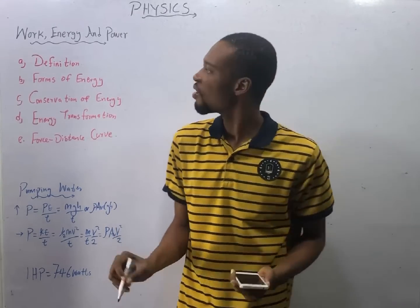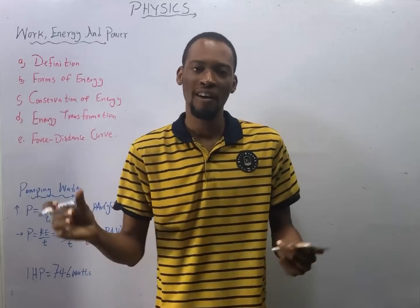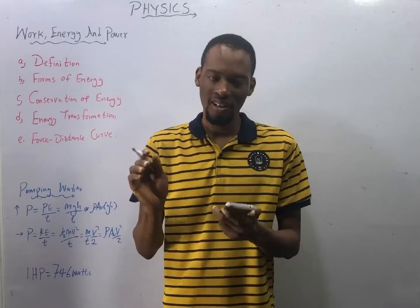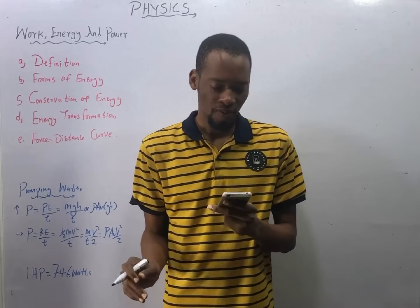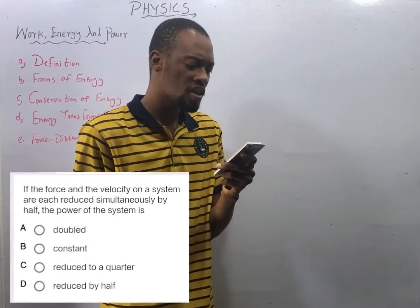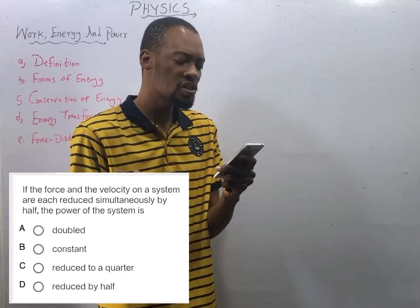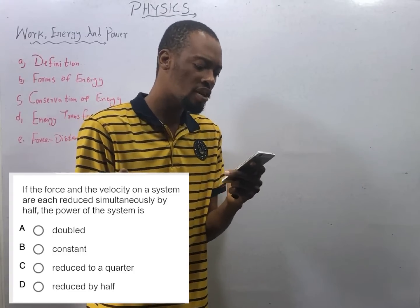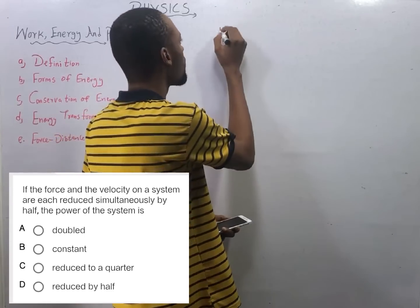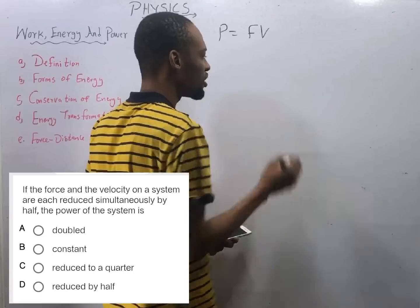We shall continue from where we stopped in episode number 25, covering questions under Work, Energy and Power using the Flash Learners JAMB application. The first question says: if the force and velocity of a system are reduced simultaneously by half, the power of the system is — Power is force times velocity.